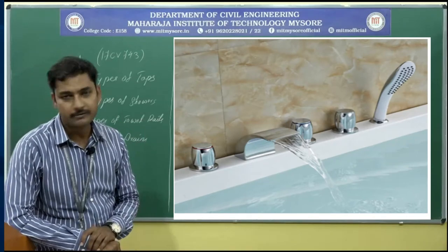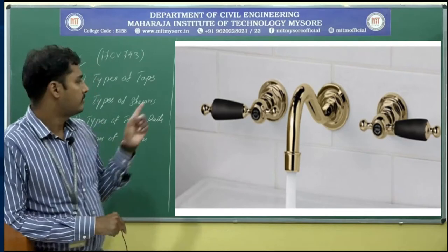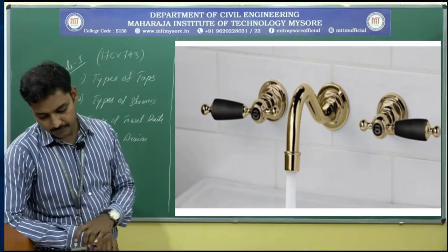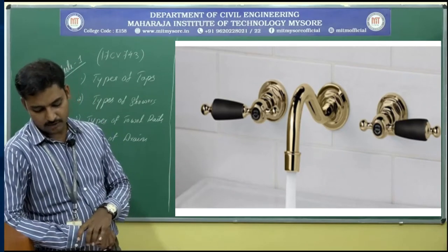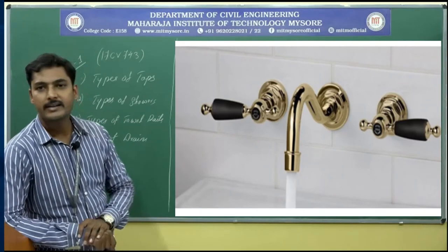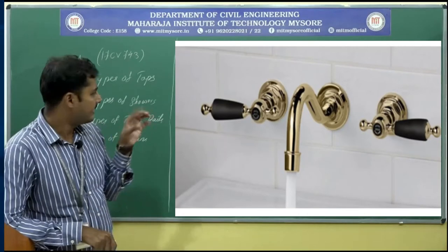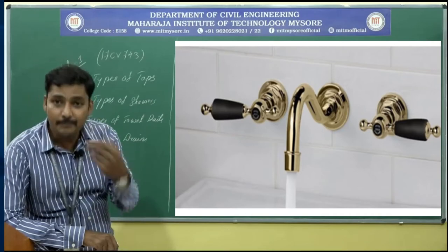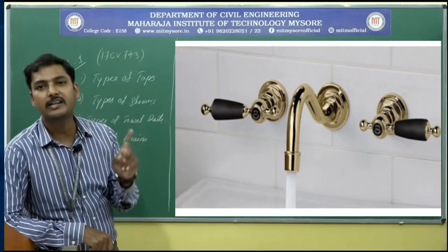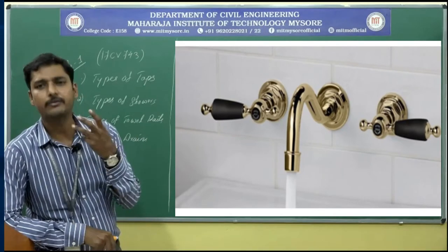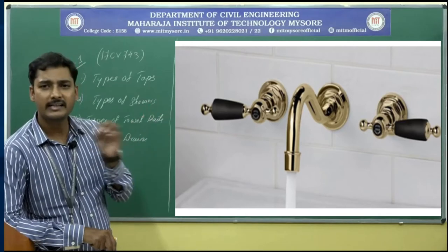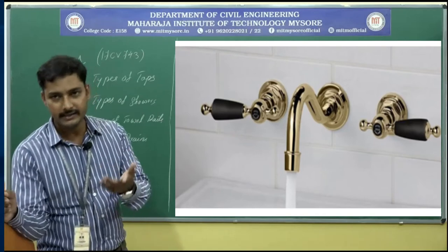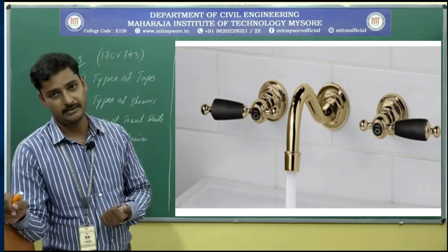The second type is wall mounted taps. These taps are mounted on walls and make it difficult to repair since all the plumbing is hidden inside the wall. The entire assembly is inserted inside and hidden in the wall, so if any leakage or repair work occurs it is difficult to access. However, in terms of aesthetics, this type of tap is good because not even a single pipeline is extended from the wall.